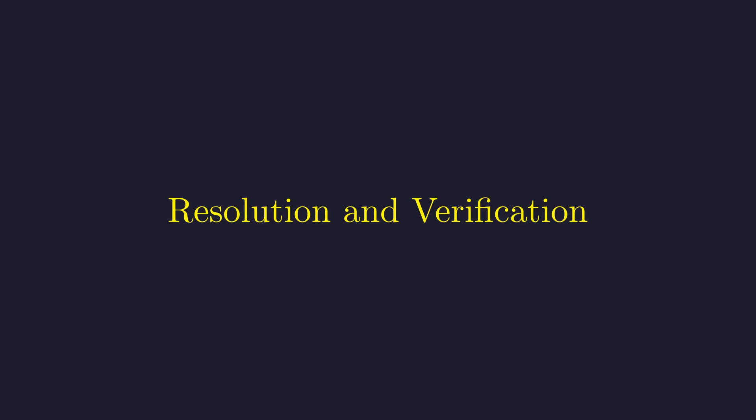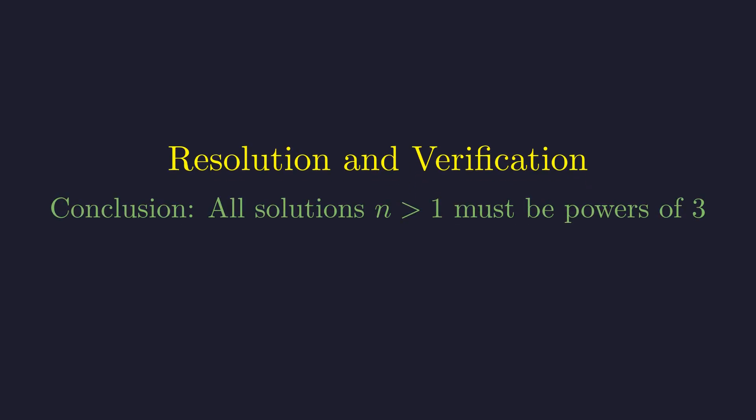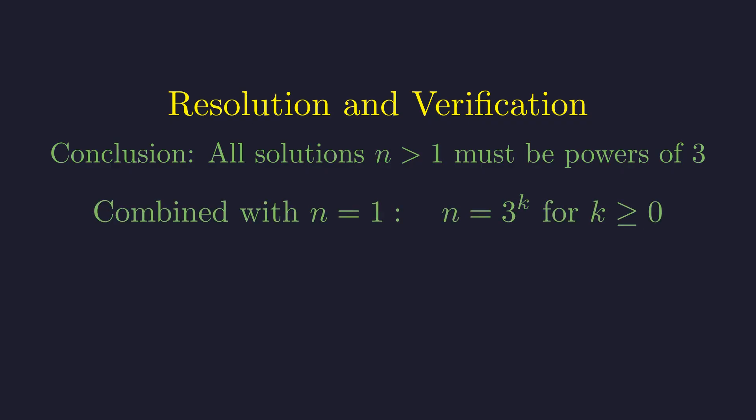Let's resolve this contradiction and verify our result with a concrete example to build confidence in our abstract proof. The only way to resolve our contradiction is to reject our assumption. Therefore, every solution n greater than 1 must indeed be a power of 3. Including our initial solution n equals 1. The complete answer is n equals 3 to the k for all non-negative integers k.